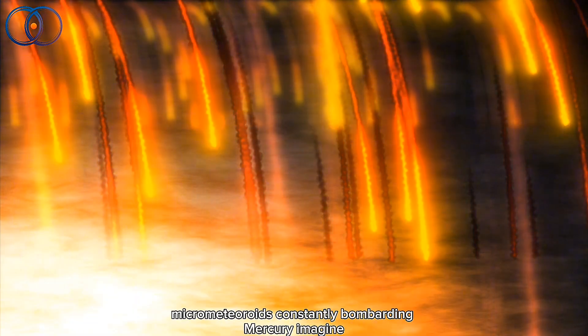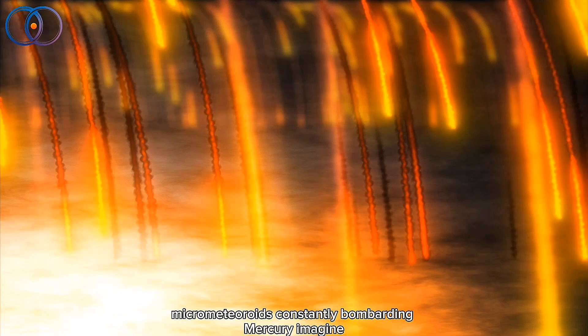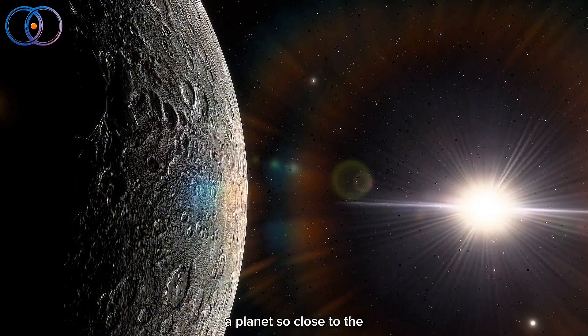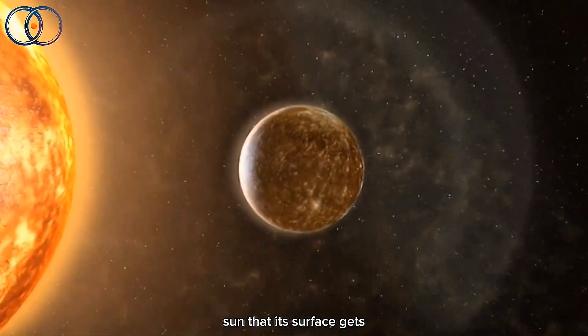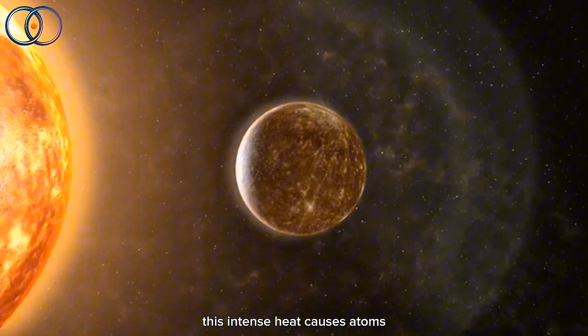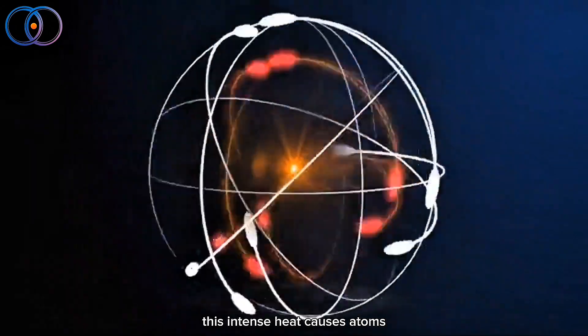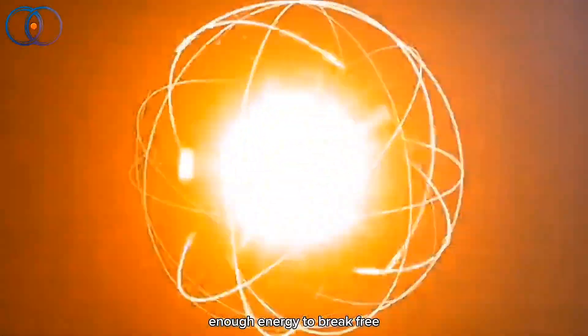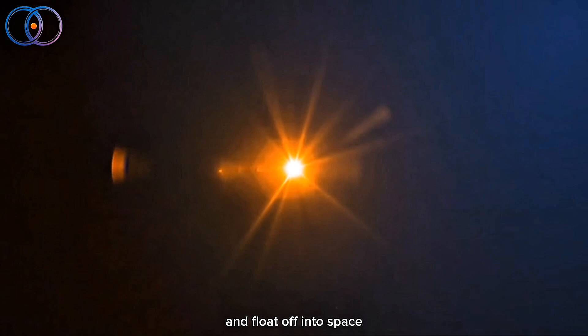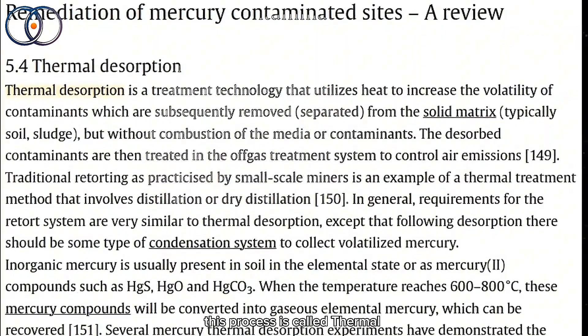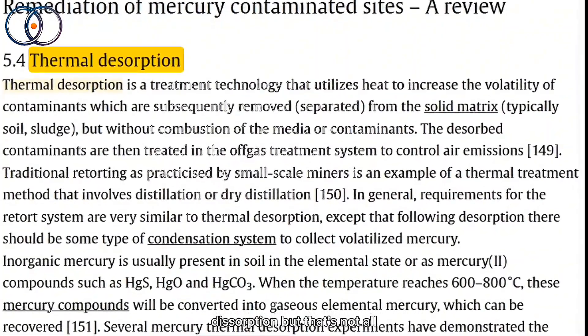Imagine a planet so close to the sun that its surface gets hotter than a blazing oven. This intense heat causes atoms on Mercury's surface to gain enough energy to break free and float off into space. This process is called thermal desorption, but that's not all.